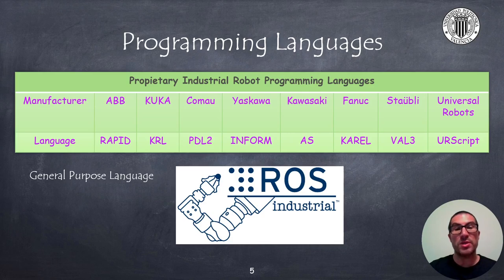ABB uses Rapid, KUKA uses KRL, COMAU uses PDL2, YASKAWA uses INFORM, Kawasaki uses AS, FANUC uses KAREL, STAUBLI uses VAL3 and Universal Robots uses URScript.